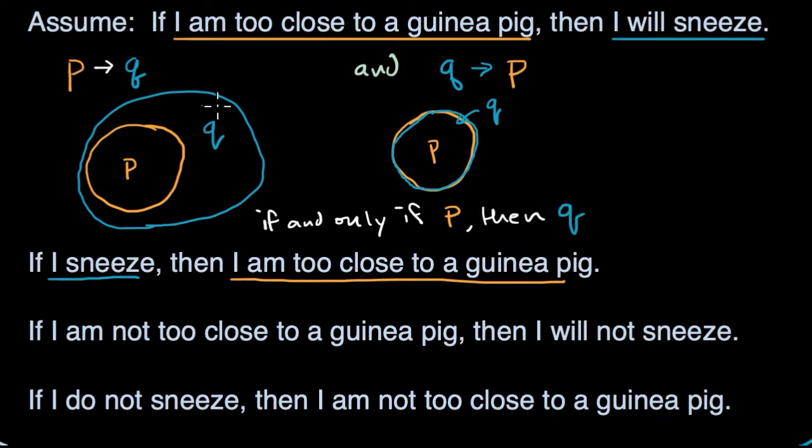So how is this different? Well, instead of just saying if, I'm saying only if. So there can't be any Qs outside of the scenario P. There cannot be any times I will sneeze outside of being close to a guinea pig. Because only if I am close to a guinea pig, then I will sneeze.